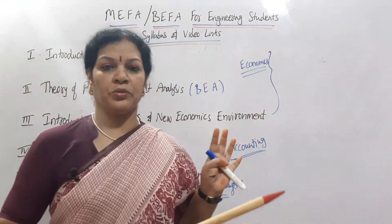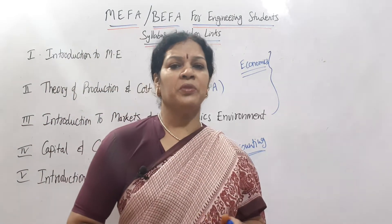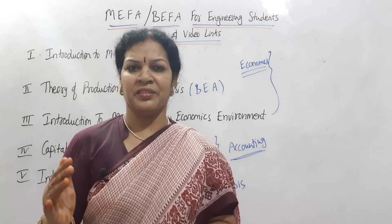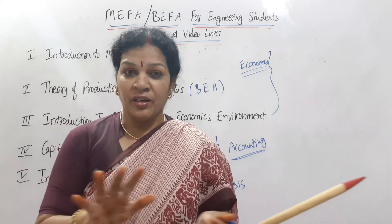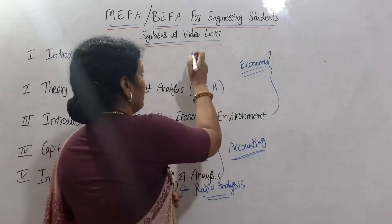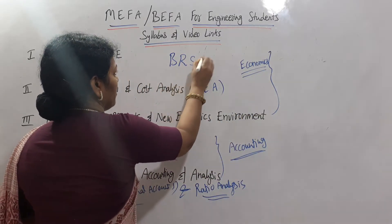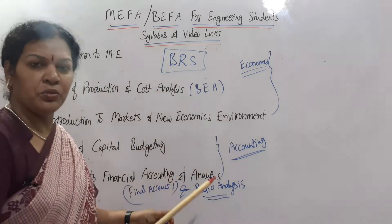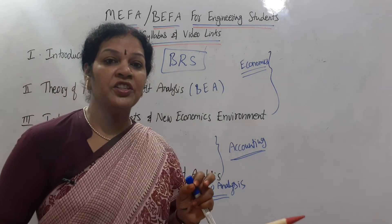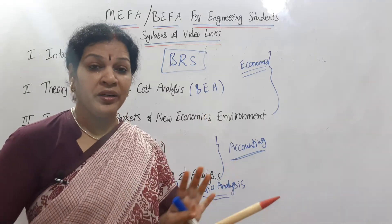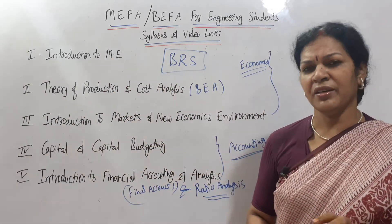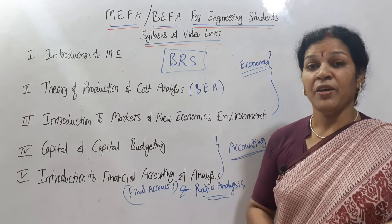So altogether, three units are economics and two units are accounting — that is the common syllabus for all engineering students. This channel is followed all over India and even from neighboring countries and South Africa. In some universities, BRS — Bank Reconciliation Statement — is also included. Most universities cover only the two accounting units, but some have added BRS. The entire syllabus is covered in our channel; about 90% you can find in one link.